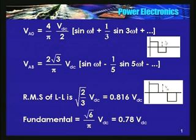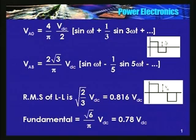Whereas the line-to-line voltage waveform has a zero-voltage period of 60-degree duration. If I write the Fourier series for this waveform, one way is to write Va0, and similarly Vb0, then subtract: Va0 − Vb0 = Vab.